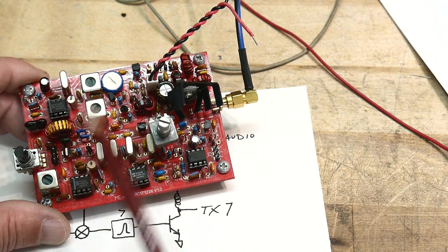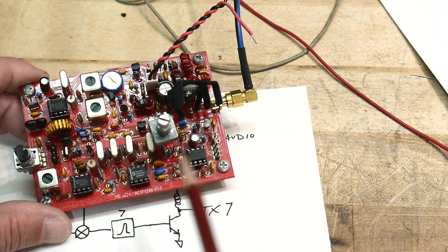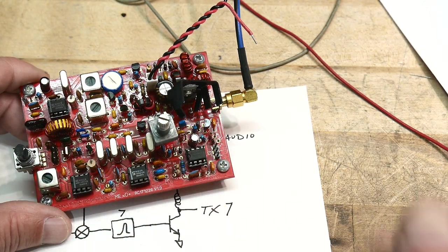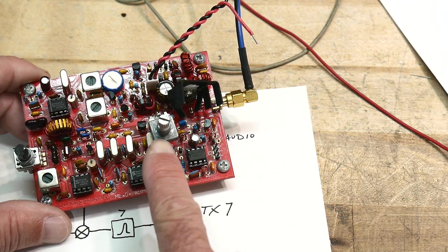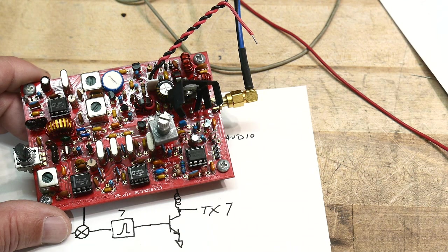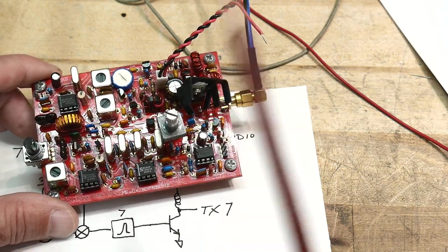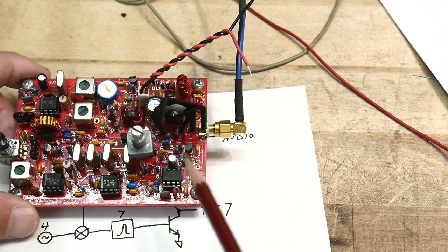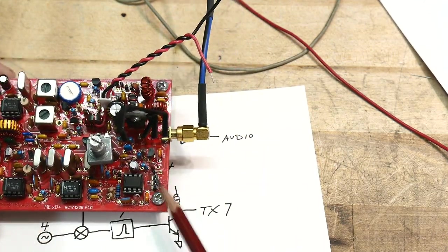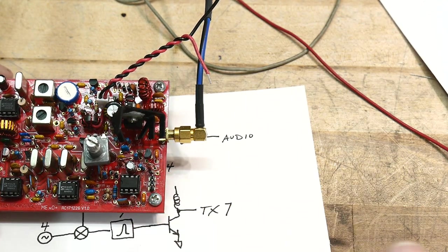This resistor here is the drive - how much drive do you send to the final transistor. And this is the 3 megahertz oscillator that you can adjust a little bit. It uses a varactor, voltage variable capacitor. And then this is the volume knob. This connector here has the key, the CW key, and then audio out. So everything's there.